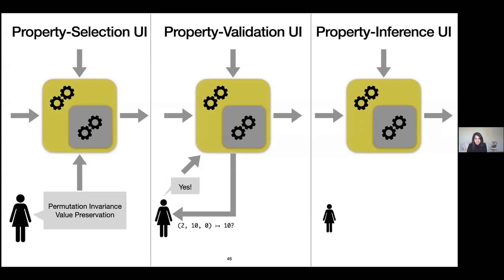The first is the property-selection UI, where the user herself selects a set of applicable properties from a finite set. For this max problem, the user might say it satisfies permutation invariance, value preservation, and so on. The burden on the user here is large, but we lessen it in the next UI — the property-validation UI — where the user is asked only to validate or invalidate perturbed examples generated by applying the property to the original examples.